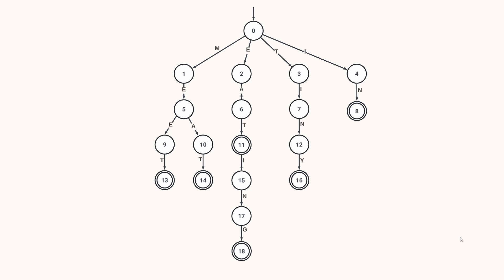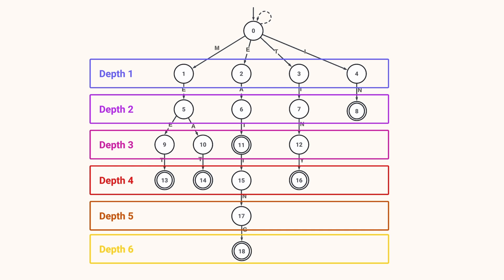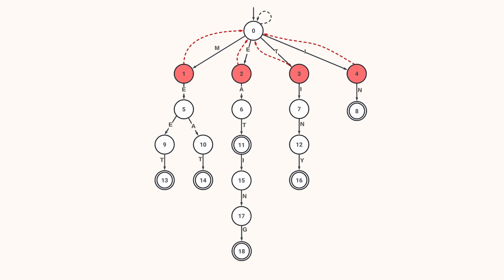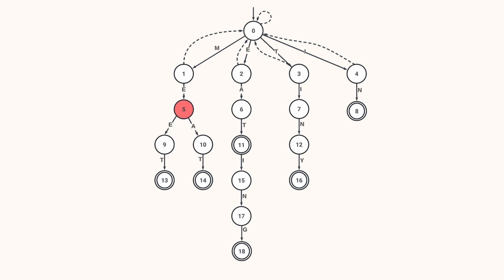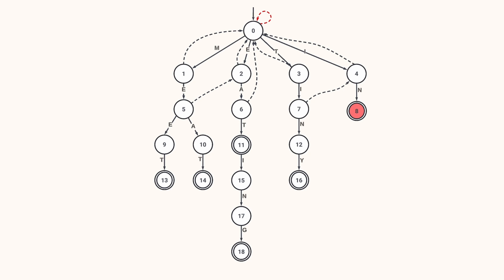Let's recap by building all suffix links and output links. The suffix link of state 0 points to itself. Depth-1 nodes have empty proper suffixes, so their suffix links all lead to state 0. For depth-2 nodes: state 5's suffix link follows state 1's link to 0, reading 'E' gives state 2. State 6 follows state 2's link to 0, reading 'A' stays in 0, so suffix link points to 0. State 7 follows state 3's link to 0, reading 'I' gives state 4. State 8 follows state 4's link to 0, reading 'N' stays in 0.